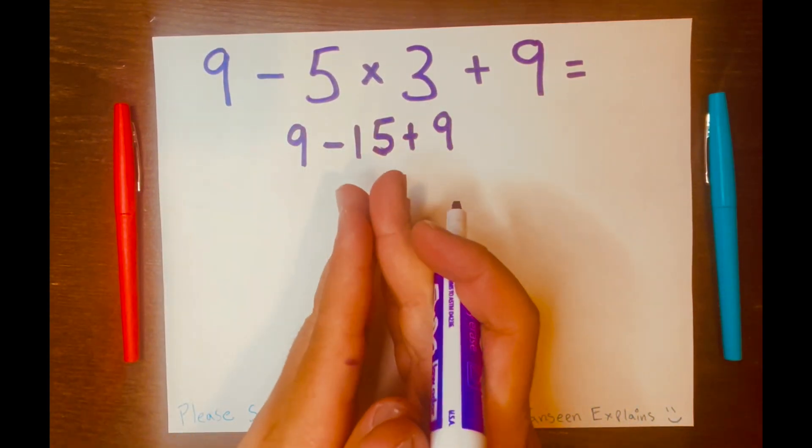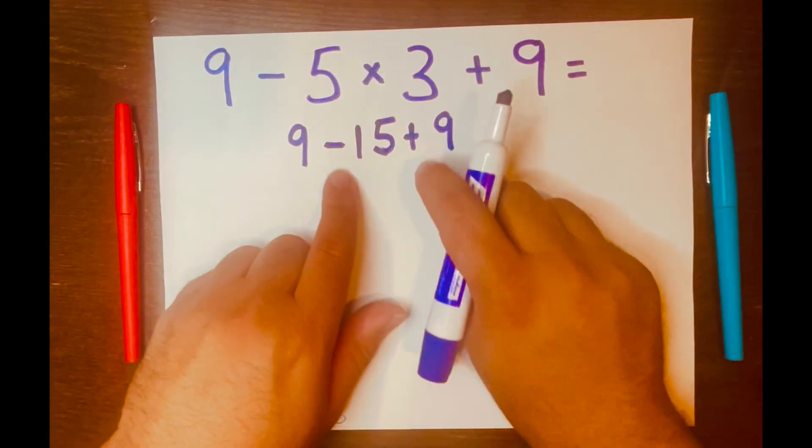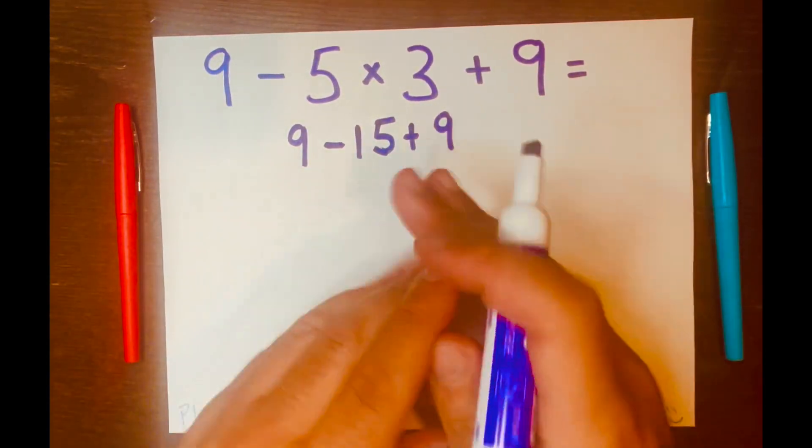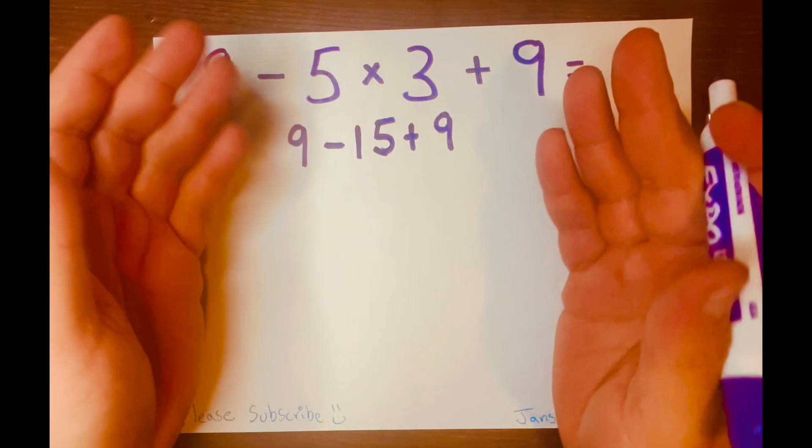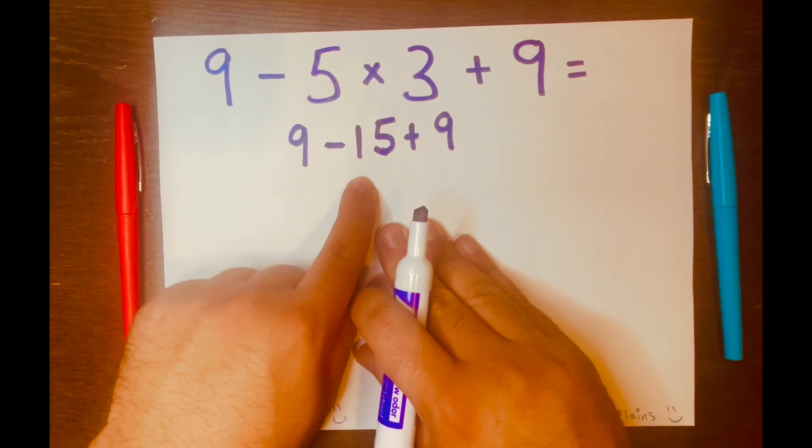So you just go based on left to right because both operations are within the same level. So you just have to read from left to right. So nine minus 15.